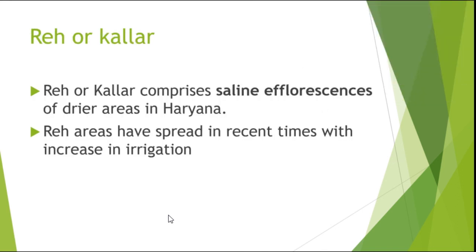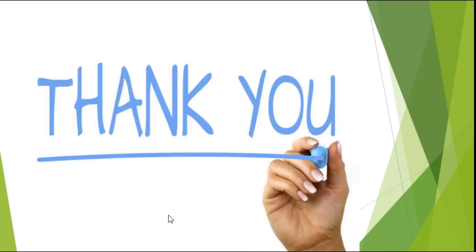The next feature is Reh or Kallar. Reh or Kallar are part of the Bhangar tract. In the relatively drier areas, Bhangar exhibits small tracts of saline and alkaline efflorescence, known as Reh or Kallar. It comprises the saline efflorescence of drier areas in Haryana. Reh areas have spread in recent times with the increase in irrigation. That's all for now. In the next video, we will look at the regional divisions of the Northern Plain. Thank you and have a nice day.